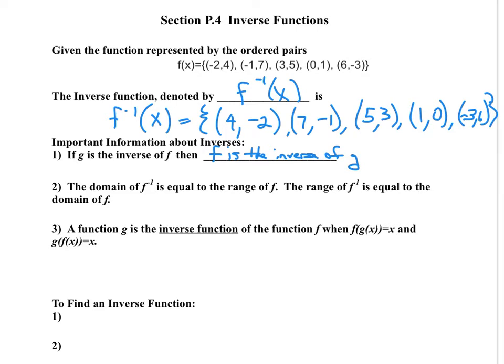A function g is the inverse function of the function f whenever a composition f of g of x brings us back to the value x, and likewise g of f of x also brings us back to x. So for example, if I start with x and plug it into g first, I get g of x. If I then take that value g of x and plug it back into f, which is the inverse function, that brings me back to my value x. That's the definition of an inverse function.